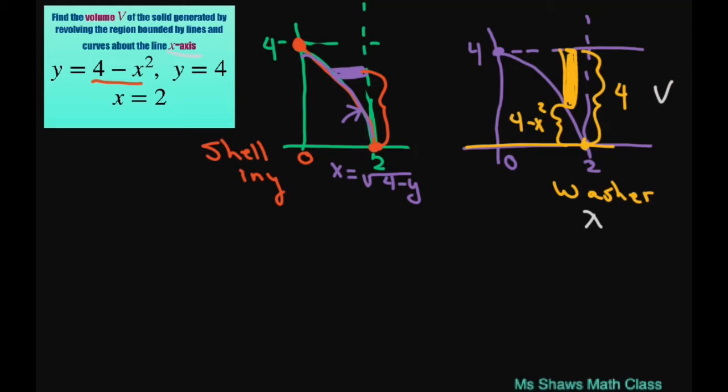We're revolving about the x-axis. So in the washer method, we need to know the outside radius. The outside radius is going to equal 4, and the inside radius equals 4 minus x squared.